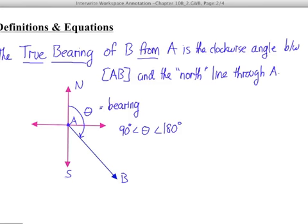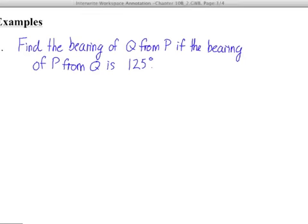Let's take a look at a few examples. For instance, let's find the bearing of Q from P, if we know the bearing of P from Q is 125 degrees. In all of these problems, it's always very useful and very important to draw a diagram. First, let's draw the four points of the compass. Again, north is always straight up.